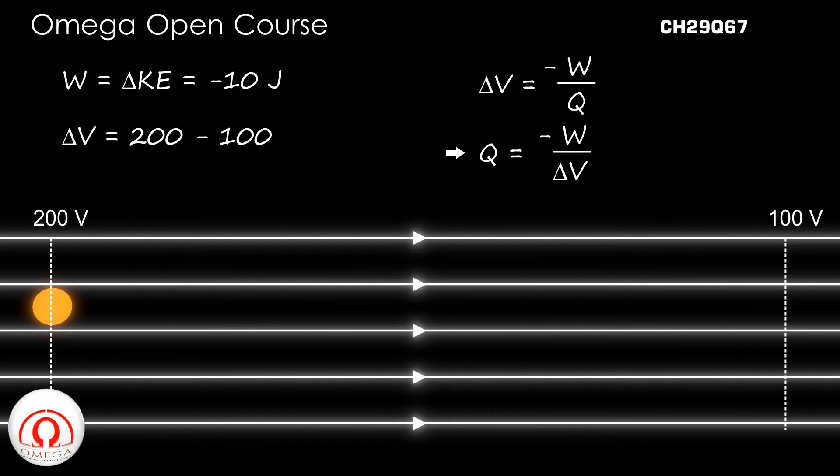Since in this case the charge is moved through a potential difference of 200 minus 100, that is 100 V, the charge transferred is minus of minus 10 divided by 100, or 0.1 Coulombs. This is our answer.